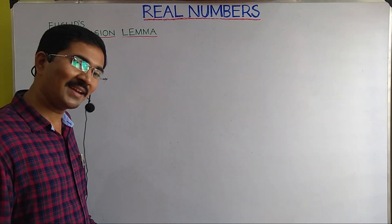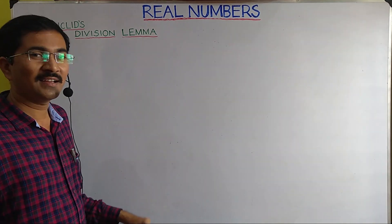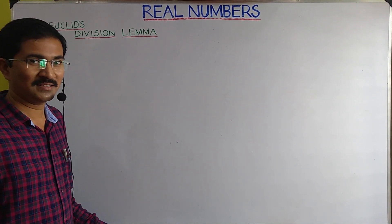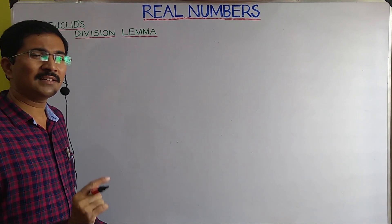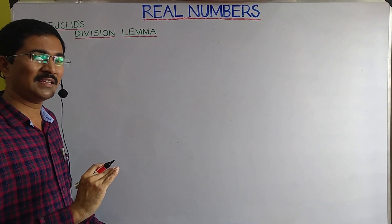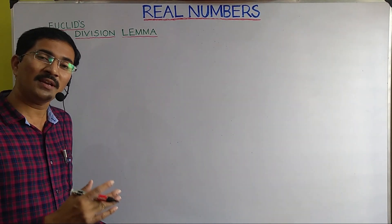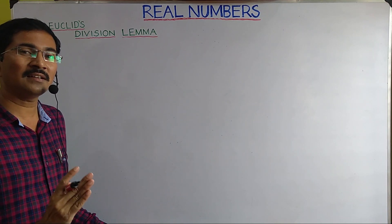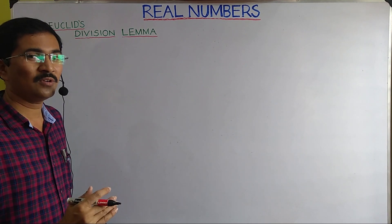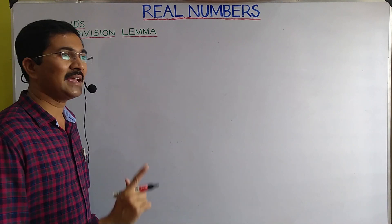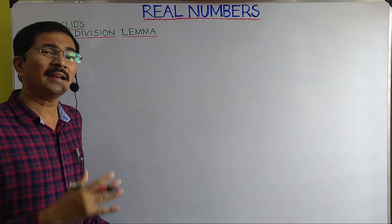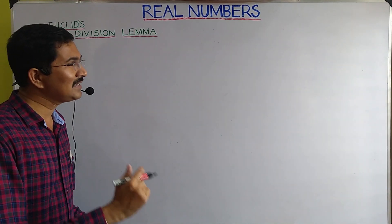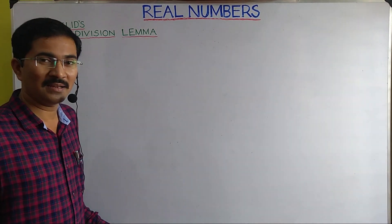Hello everybody, welcome to Math et a Go. This is Govardhan coming to you with mathematics of 10th standard. In this session we will deal with the first chapter of 10th mathematics: real numbers. Real numbers are all the numbers that we have been using since we started our education. In mathematical terms, real numbers are numbers that can be represented on a number line.